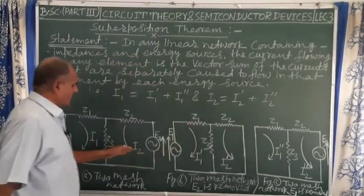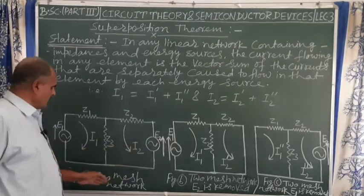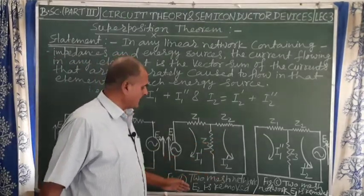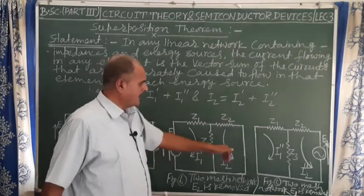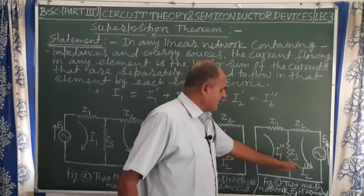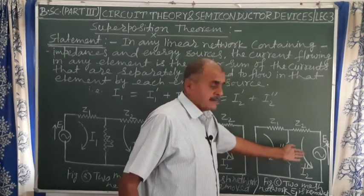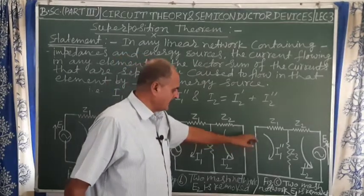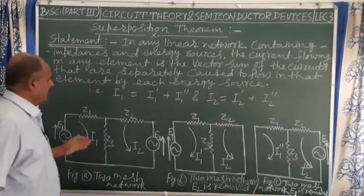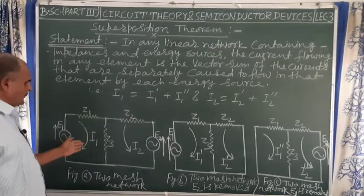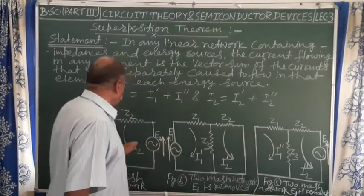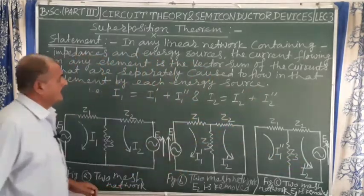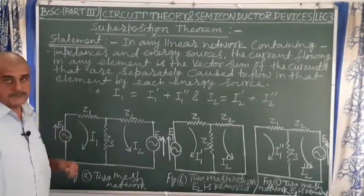And i2 is equal to the current in the second branch of the two-mesh network of figure A, which equals i2-dash — the current when generator e2 is removed — plus i2-double-dash — the current when generator e1 is removed. So in the Superposition Theorem we have i1 = i1-dash + i1-double-dash, and i2 = i2-dash + i2-double-dash. This is the statement of the Superposition Theorem.